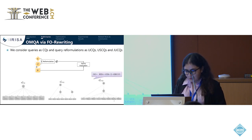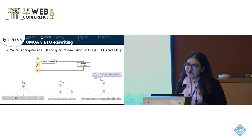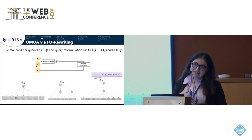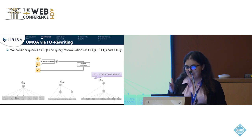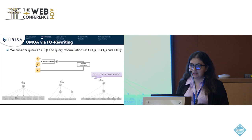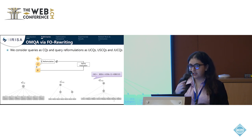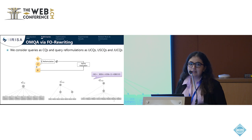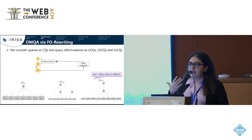Going back to our previous example, if we ask the query that looks for people who are supervised and who work with researcher H, we get the following reformulations according to the languages of UCQ, USCQ, and JUCQ. These three reformulations are syntactically different but semantically equivalent — they represent different forms of unions and joins of conjunctive queries and compute the same answers over the knowledge base.